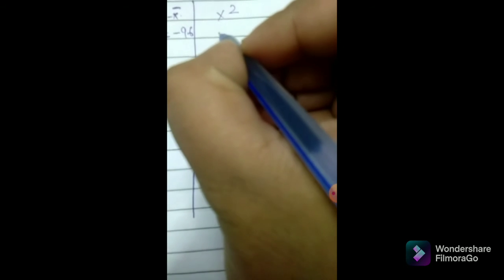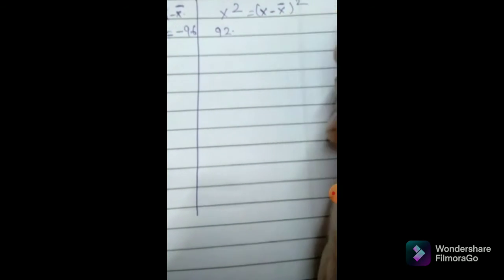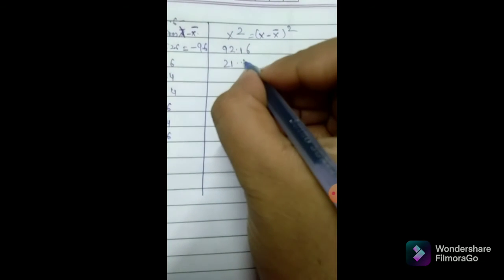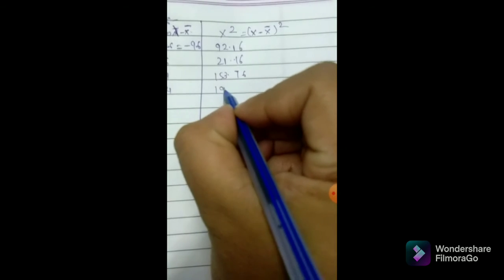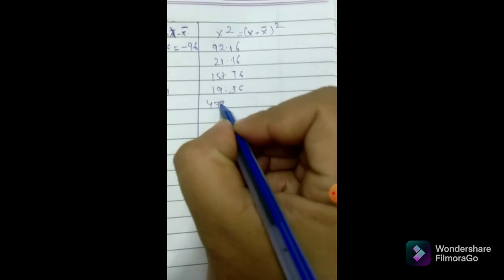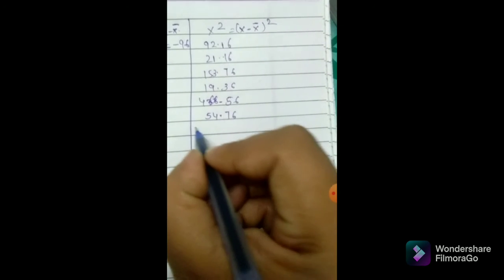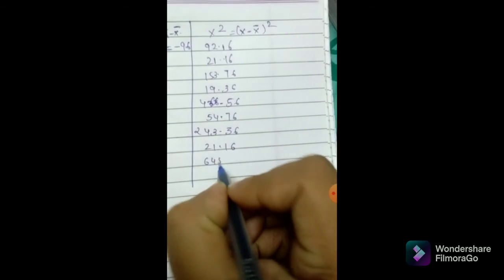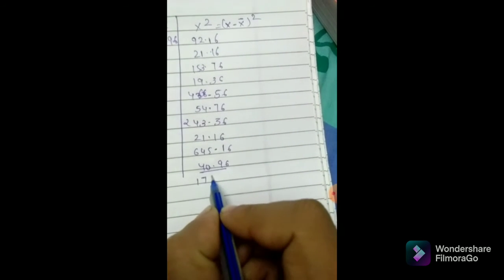Now we will calculate (x - x̄)². We will square each deviation. 9.6 squared is 92.16, 4.6 squared is 21.16, 12.4 squared is 153.76, 4.4 squared is 19.36, 21.6 squared is 466.56, 7.4 squared is 54.76, 15.6 squared is 243.36, 4.6 squared is 21.16, 25.4 squared is 645.16, and 6.4 squared is 40.96.